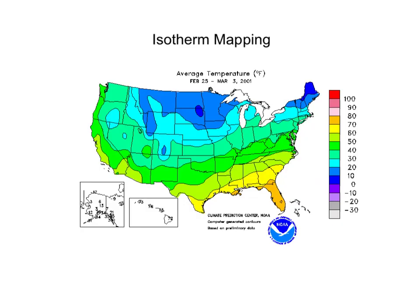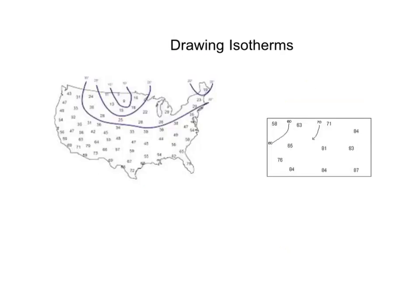The other kind of isoline map that most people are already familiar with is isotherm mapping. The key word here is 'therm,' so we're thinking temperature. These are lines connecting areas of equal temperature, and you can see it's divided by tens — everything in the 60s is green, everything in the 10s is dark blue, light blue is 20s, and so on. To draw them, you break them into tens. Here's a 58, so your first line is at 60. All your 60s are together, then your next line is at 70, then you split your 70s from your 80s, and then all the 80s get shaded and colored in.